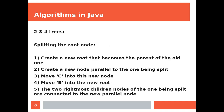Splitting the root node: create a new root that becomes the parent of the old one. Create a new node parallel to the one being split. Move C into the new node. Move B into the new root. The two rightmost children of the node being split are connected to the new parallel node.